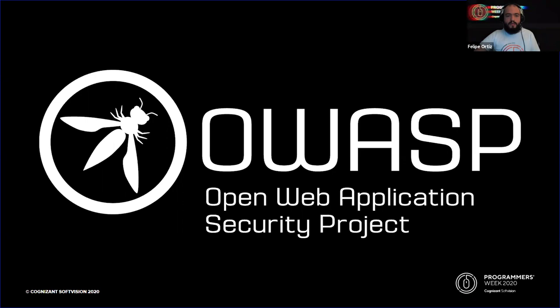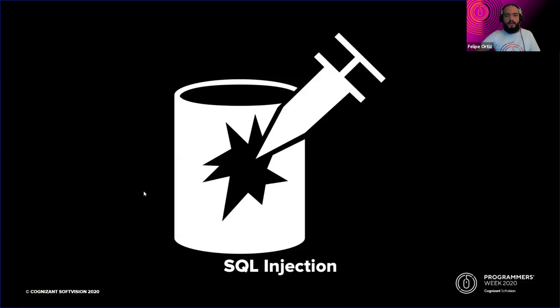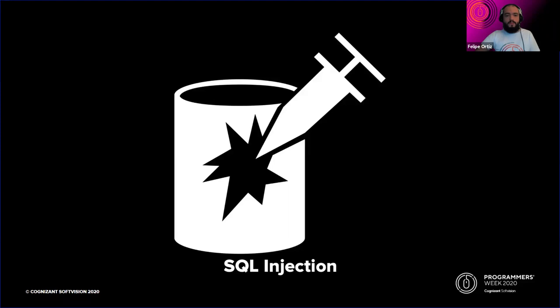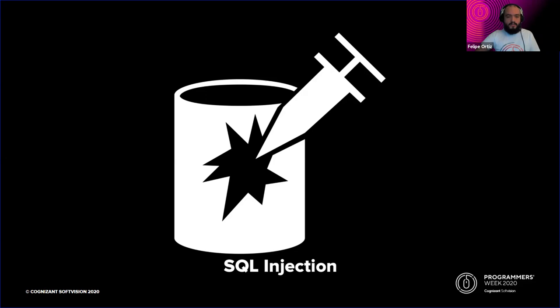Let's begin with the number one web application security risk: injection. In terms of exploitability and detectability, it's a very serious concern because it can be catastrophic to the business, and we can no longer rely on the data that we have stored. Possibly that data might be corrupted or can evolve into denial of service. And worst case scenario, it can take down our database management system or input some commands into our operating system.